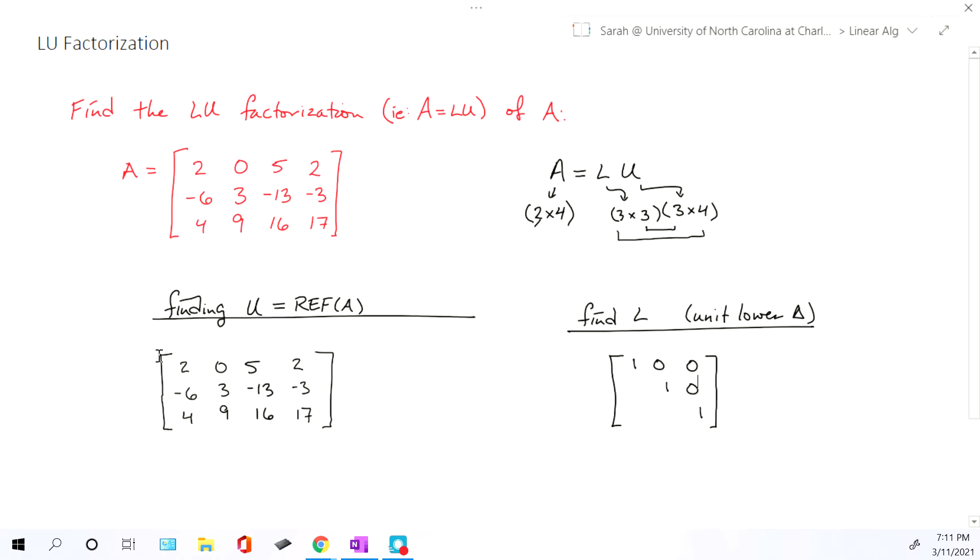Then we go back over to U, and we say, all right, well, the only operations we're allowed to use is multiply some row by a scalar and add it to another row. Specifically, you start looking where your pivots are. So here, we notice that our first pivot should be at 2. So we want to get rid of the numbers negative 6 and 4, which means in terms of what we're going to be doing, we're going to have row 2 and row 3 change, and you have to use the row that the pivot lives in to change them.